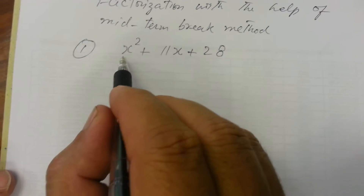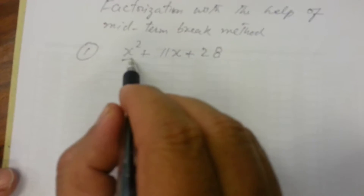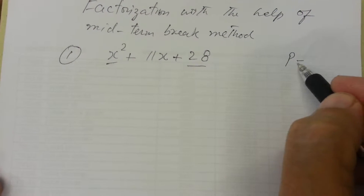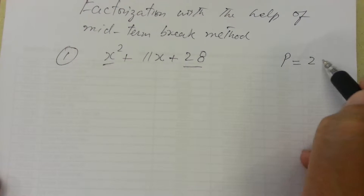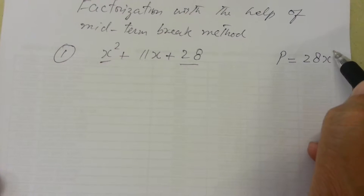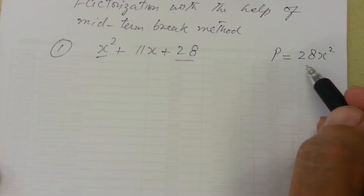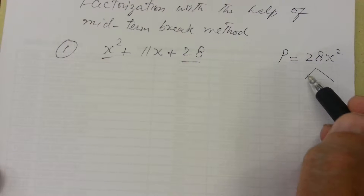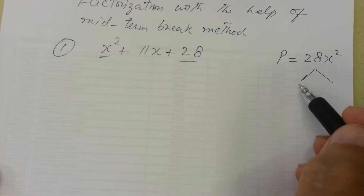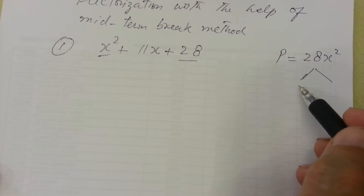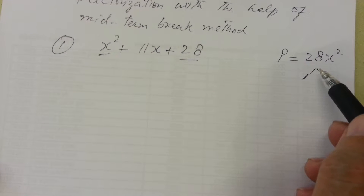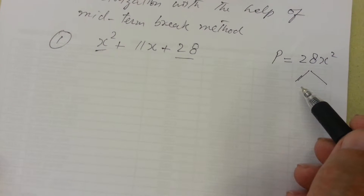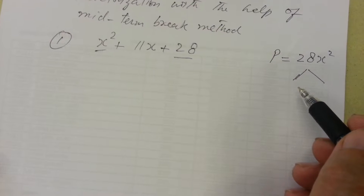First of all, we will multiply the first term and the last term. The product of these two numbers will be 28x squared. Now we want two numbers such that when we multiply them the product is 28x squared, and the sum of these numbers is 11x.